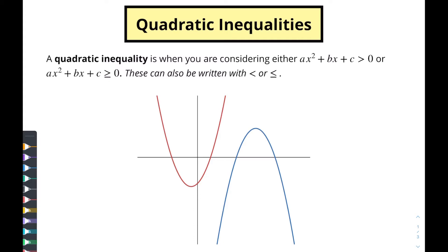For example, let's take a look at this red one right here. If we want to find where ax squared plus bx plus c is greater than zero, we want to look at what x values will produce a result that is greater than zero. So if we're considering our x-intercepts, all of the x values going out this way are going to correspond to a value greater than zero when we substitute in those x values. Similarly for this red one, x values going out the other way will also produce a result that is greater than zero.